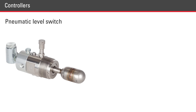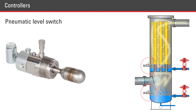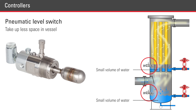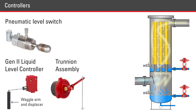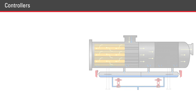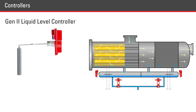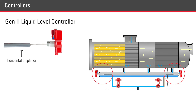Pneumatic level switches are ideal for a two-stage filter separator because they take up less space. The volume of liquids in the vessel is relatively small, and most of the space contains filter elements, leaving no room for the Gen2 level controller or a trending assembly for mechanical operation. In a horizontal filter separator, a Kimray Gen2 liquid level controller is an option because of the available space in the sump chamber of the vessel.